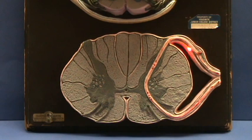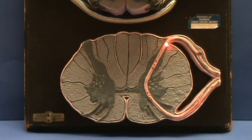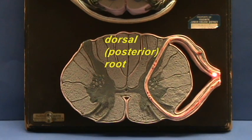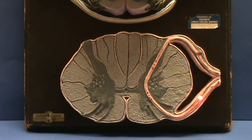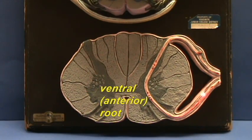Neurons that are bringing sensory information to the spinal cord are traveling through this section here, which represents the dorsal or posterior root of the spinal cord. The neurons that have axons traveling through here are carrying motor information from the spinal cord to the body, and this would then be the anterior or the ventral root.